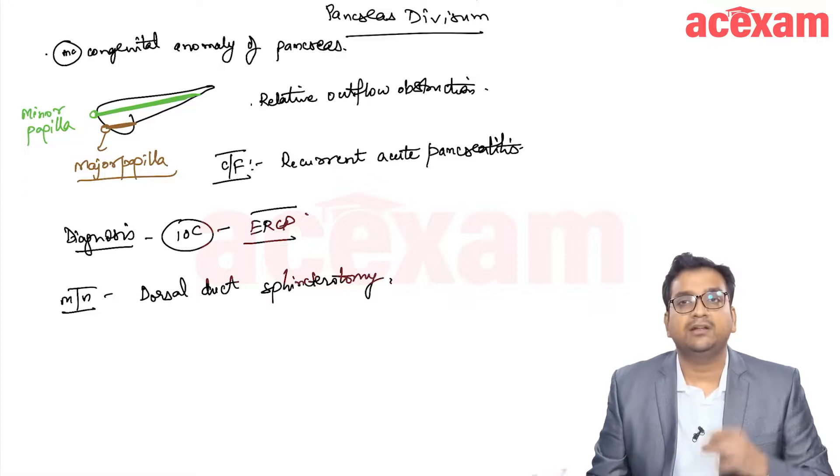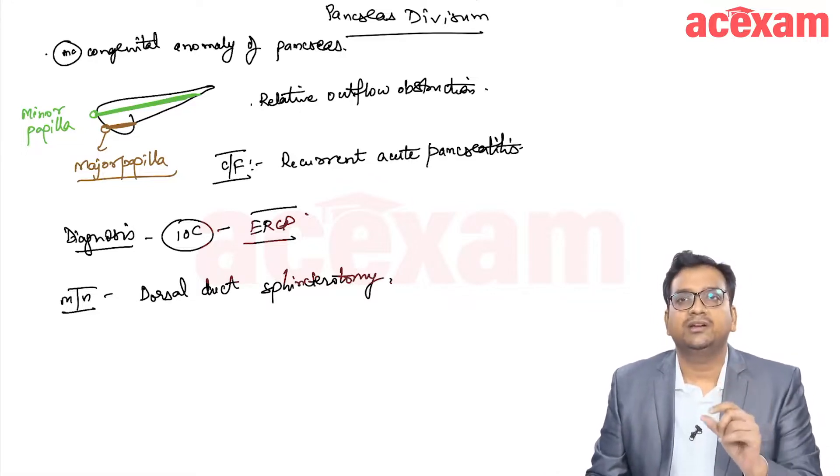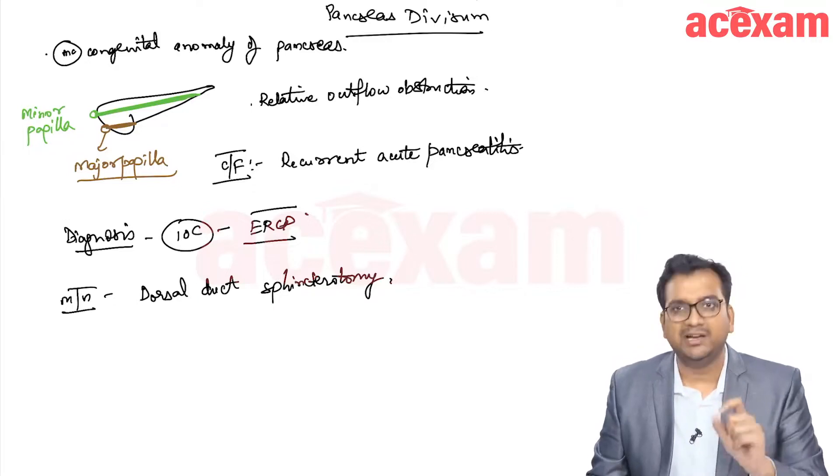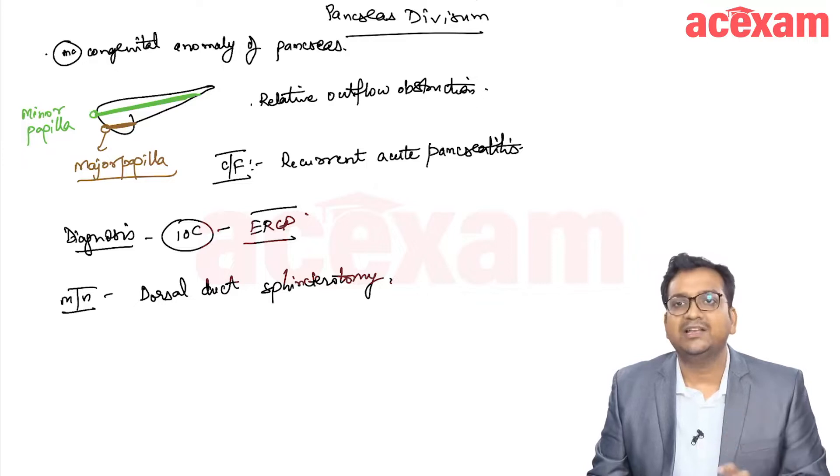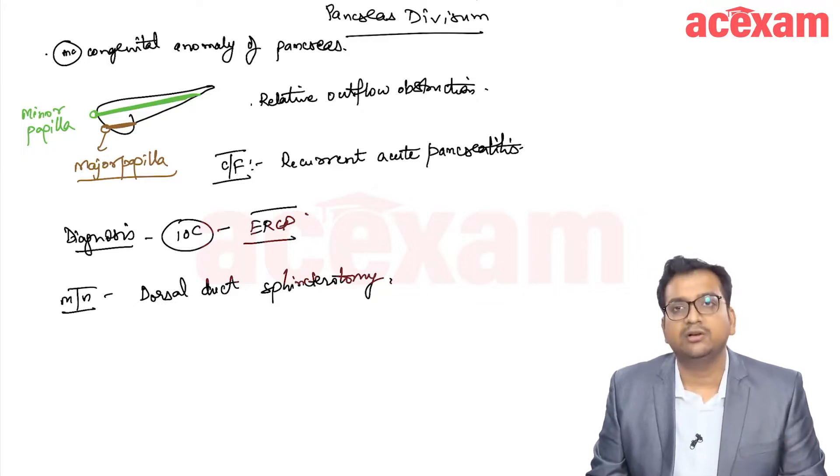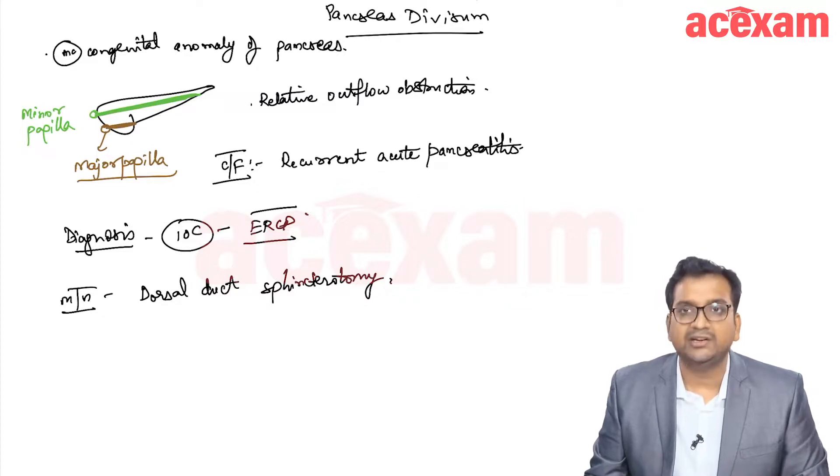We divide the sphincter of the dorsal duct and dilate the opening of the dorsal duct, the minor papilla, or perform minor papillotomy. The minor papilla is divided and the opening is enlarged, which resolves the problem of outflow obstruction and the patient clinically improves.